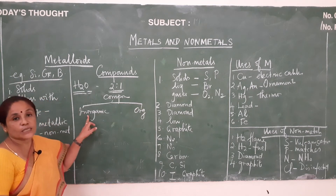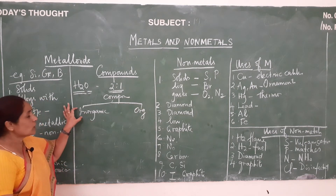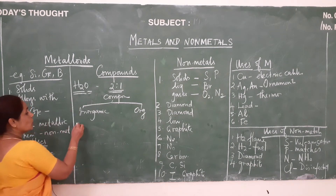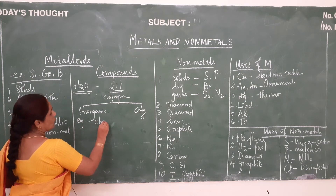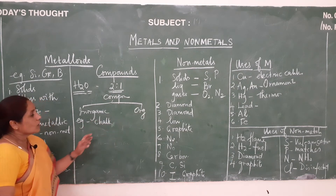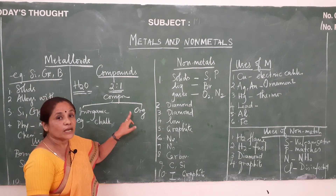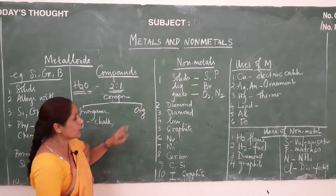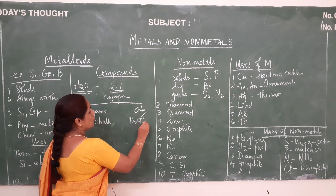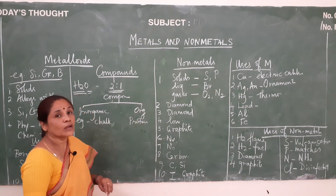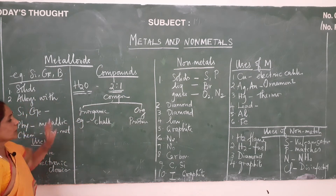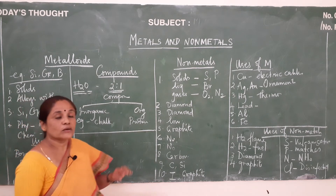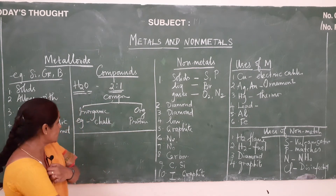Inorganic compounds are obtained from non-living sources. Example: chalk. Organic compounds are obtained from living sources like plants and animals. Example: protein. Compounds also exist in solid state — examples: sodium chloride, sodium hydroxide, calcium carbonate. In liquid state — examples: water, sulfuric acid, nitric acid. In gaseous state — examples: sulfur dioxide, carbon dioxide, carbon monoxide.